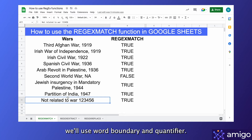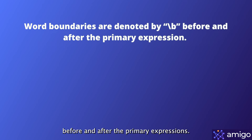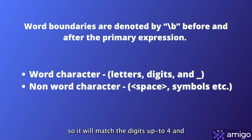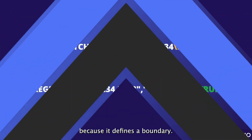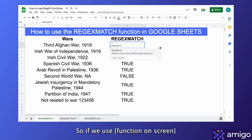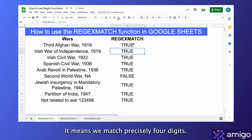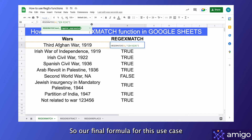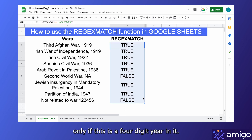To solve this problem, we'll use word boundary and quantifier. Word boundaries are denoted by backslash B before and after the primary expressions — this marks a boundary between a word character and a non-word character. So it will match digits up to 4 and then look for a boundary; a fifth digit or letter will break the match, but a space won't because it defines a boundary. The quantifier is denoted by N inside curly brackets, where N is a number. So if we use REGEXMATCH A3 with [0-9] and the quantifier {4}, it means we match precisely 4 digits. Our final formula for this use case will only return true if the cell has a 4-digit year in it.